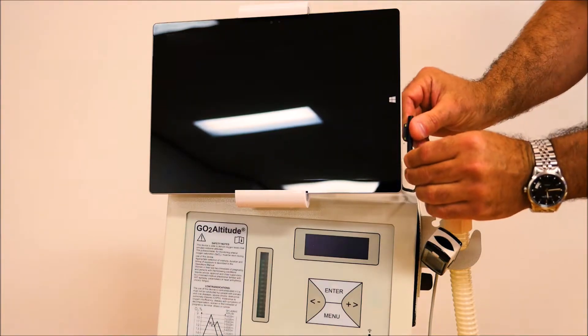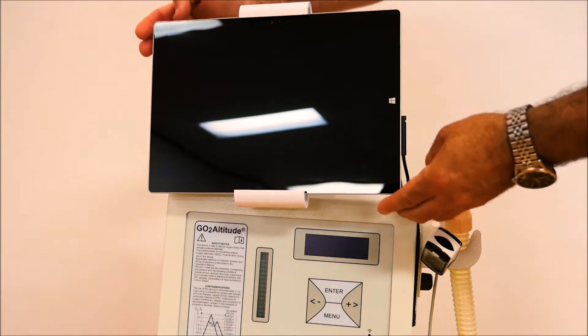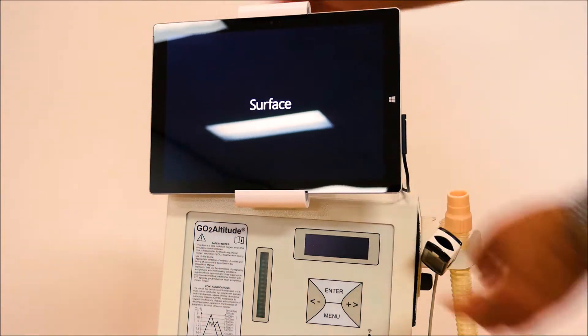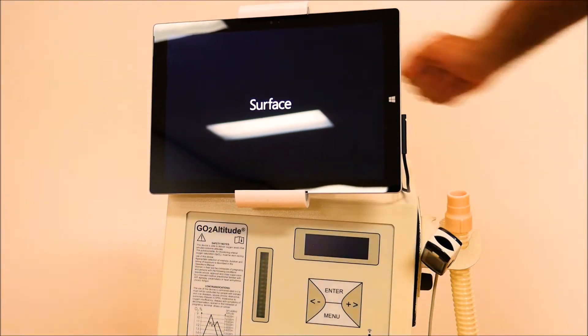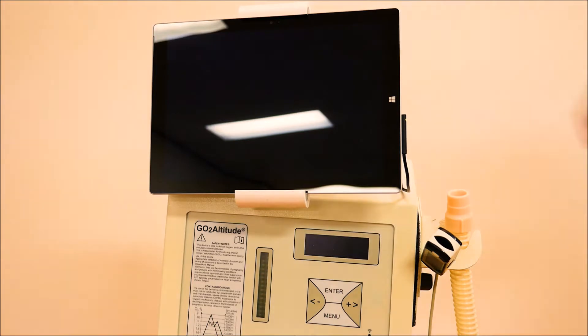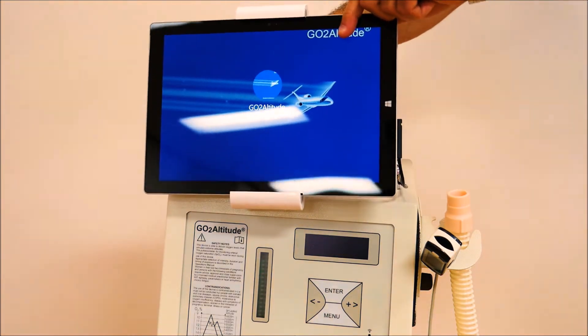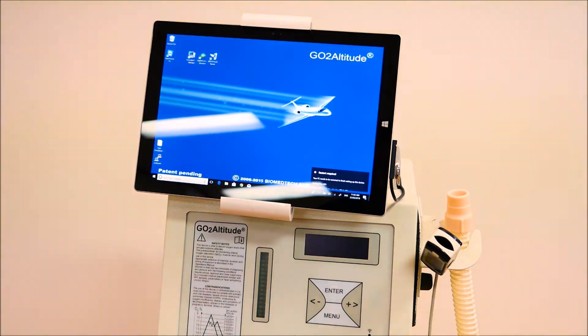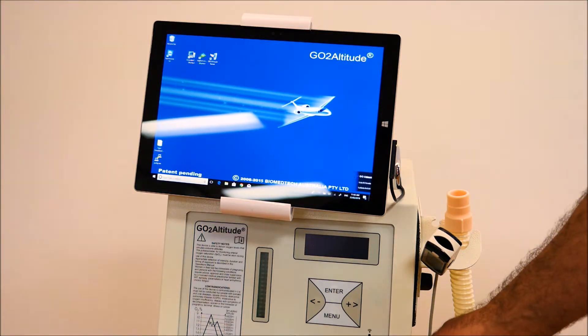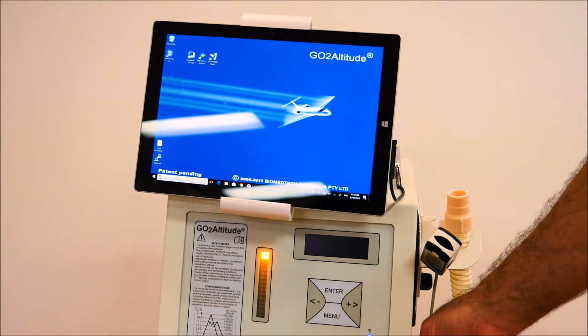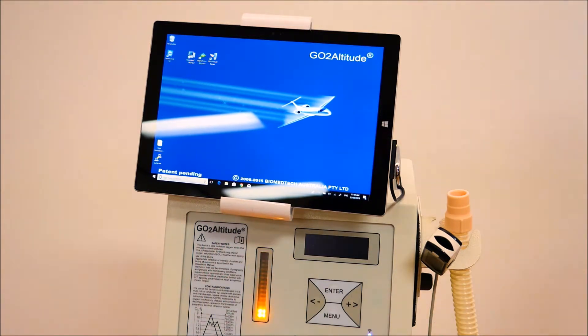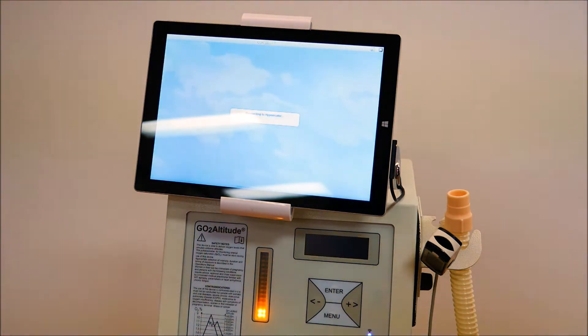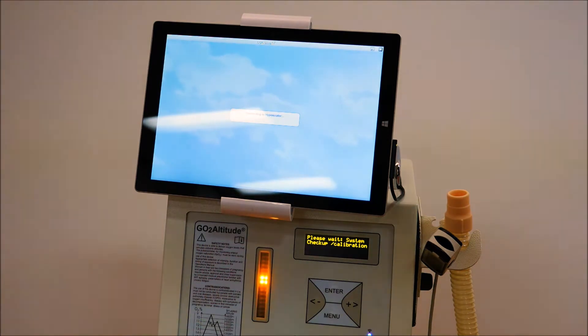Connect power to Surface and power it up. Now we can power the hypoxicator by pressing this switch. It takes a few moments for the device to calibrate and set up.